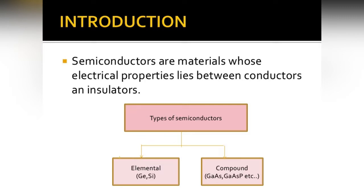Semiconductors have other properties as well. They can be defined on the basis of energy band gap. Semiconductors have various characteristics: they have a negative temperature coefficient of resistance, they do not follow Ohm's law, their electrical conductivity is very effective, and the resistivity of the semiconductor depends on the type of impurities.